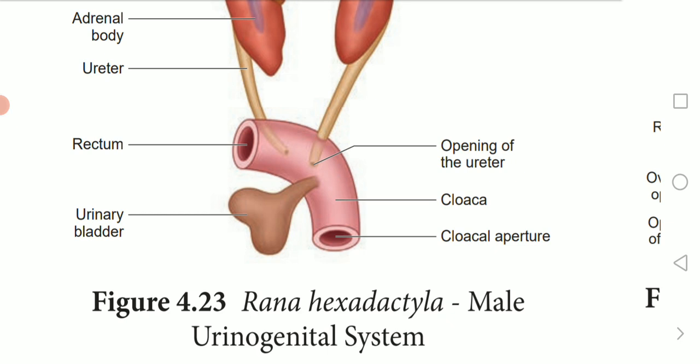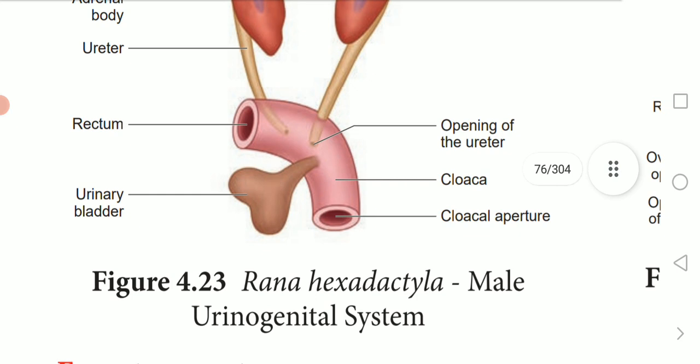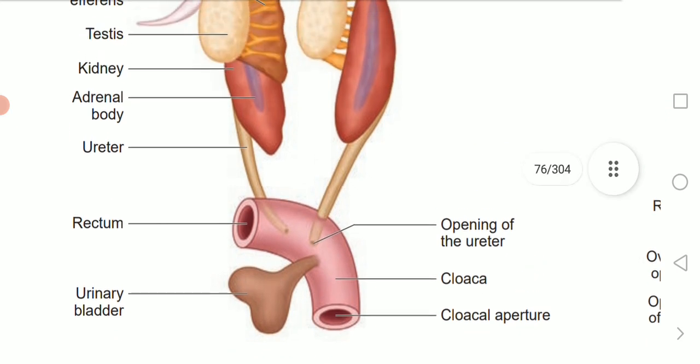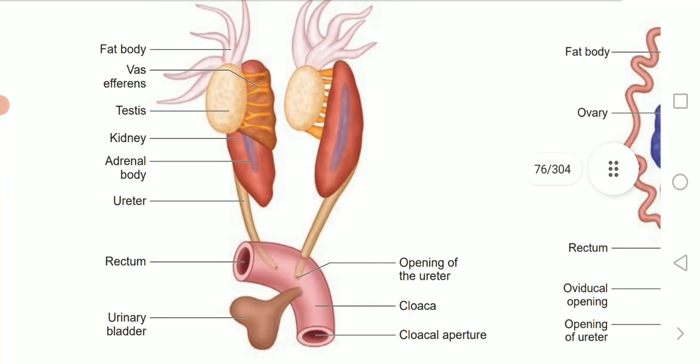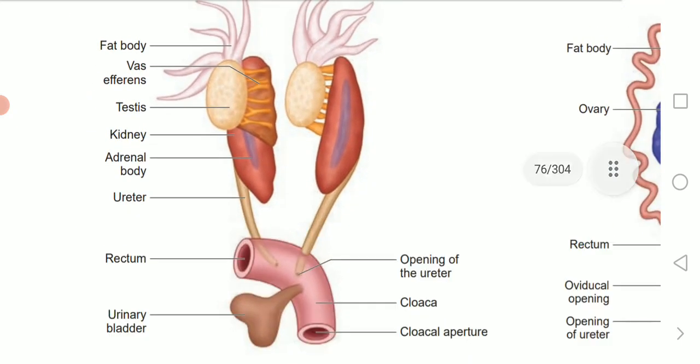The kidneys are dark red in color. Kidneys are dark red, long, flat organs situated on either side of the vertebral column in the body cavity.